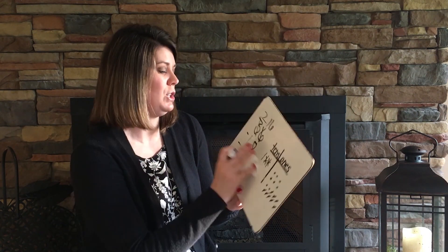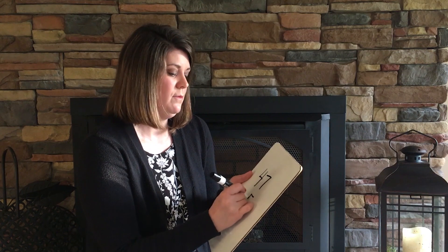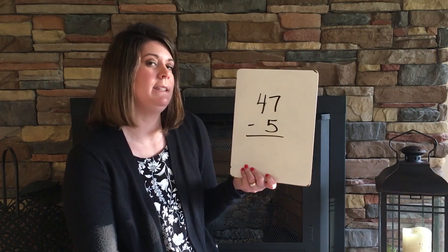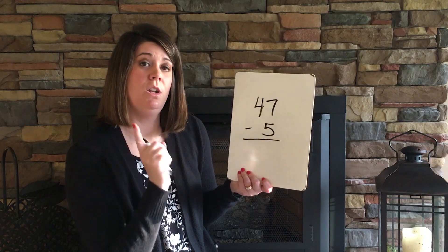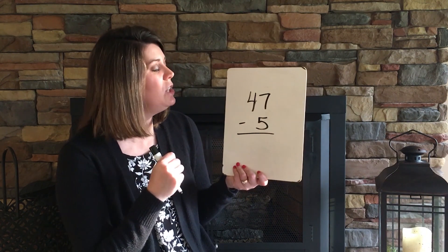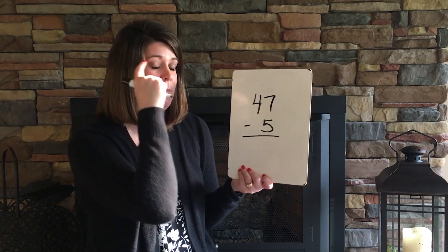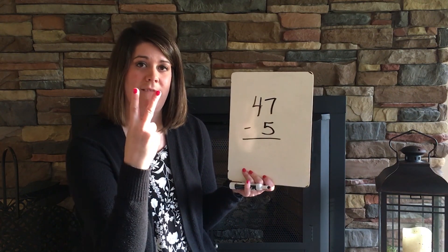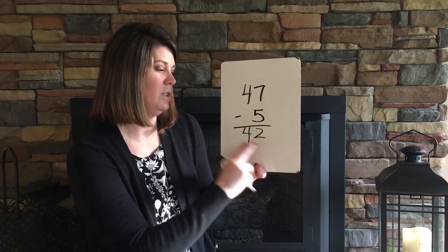Another way is to use regrouping strategies to work out problems like 47 minus 5. I look at my 1's place and ask, more on top or more on the floor? More on top — no need to stop. You can use fact families, put 5 in your head and count up, or swipe the 5 and count up to 7: 5, 6, 7 — that's 2. And I have 4 in the 10's place, giving an answer of 42.